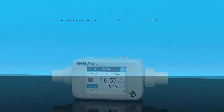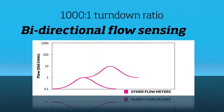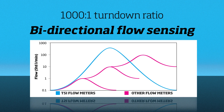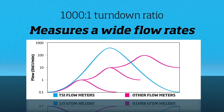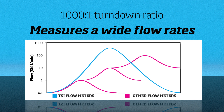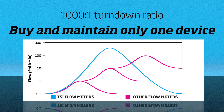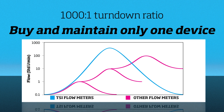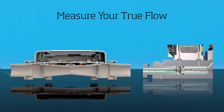The 5000 series provides bi-directional flow sensing with a best-in-class turndown ratio, enabling you to measure a wide range of flow rates with a single meter — even when your full flow range is unknown or fluctuates widely.